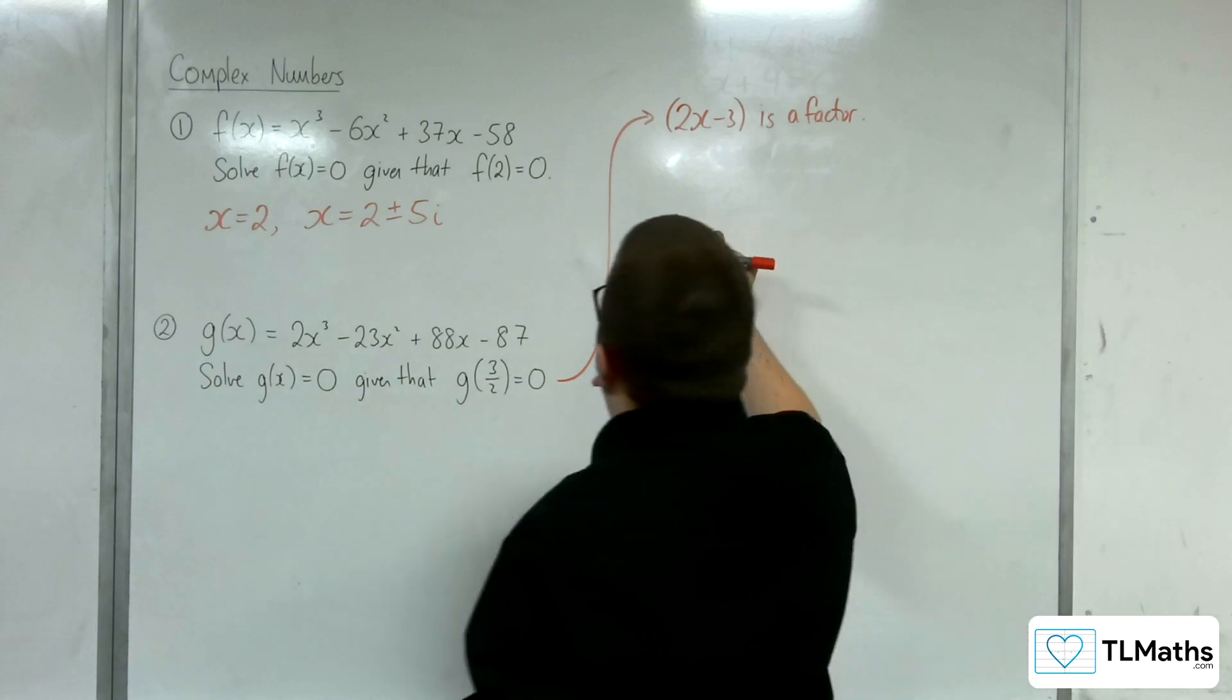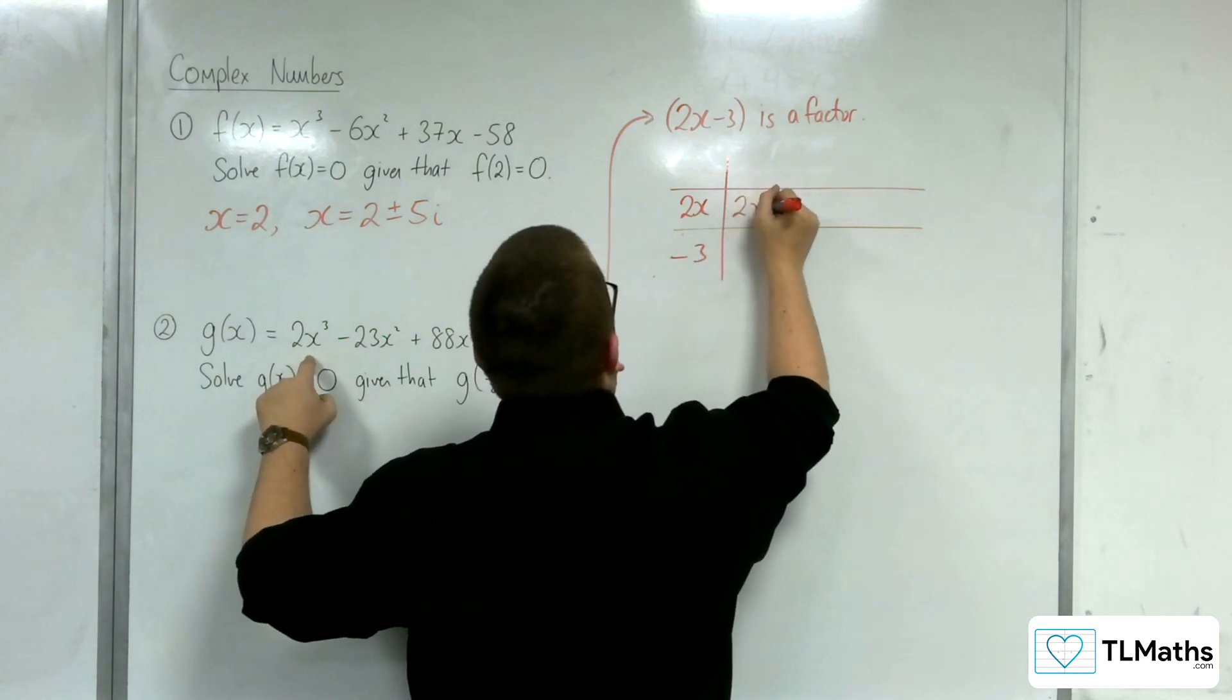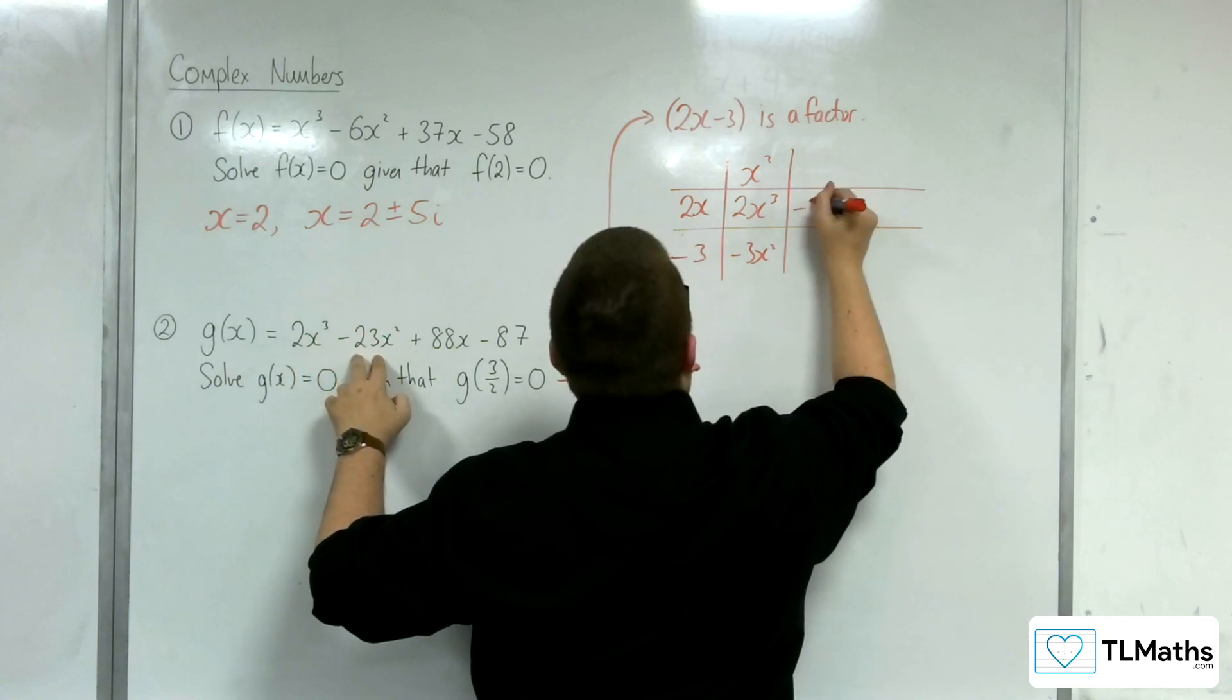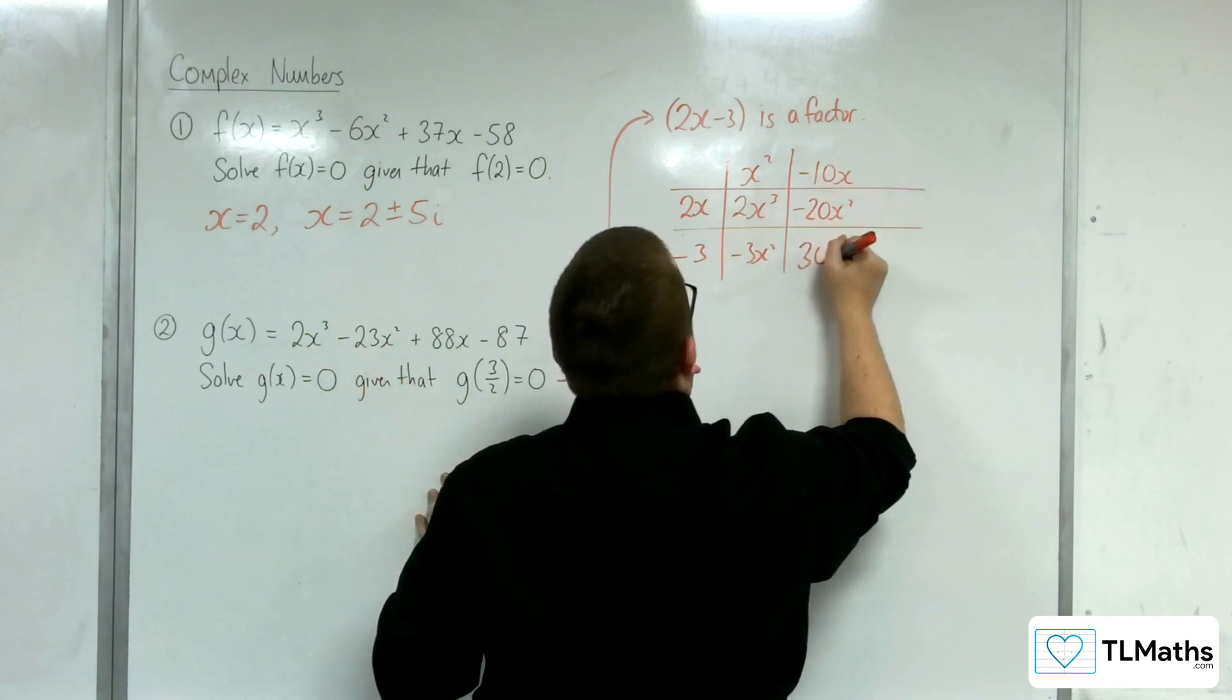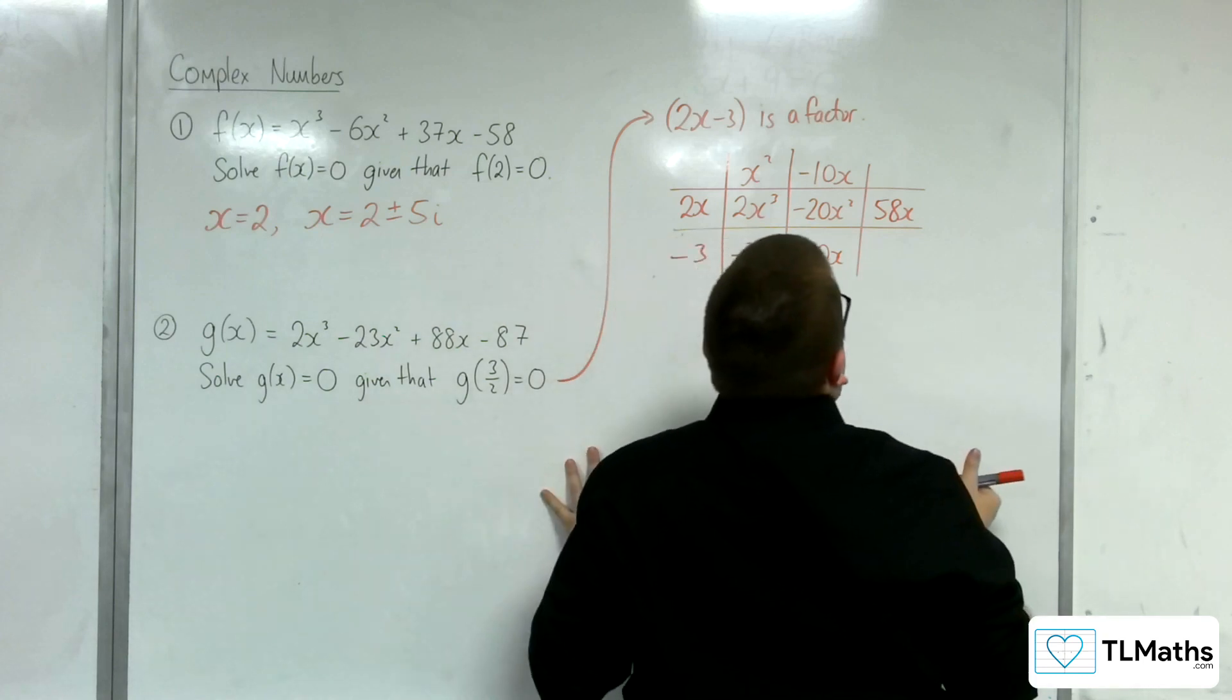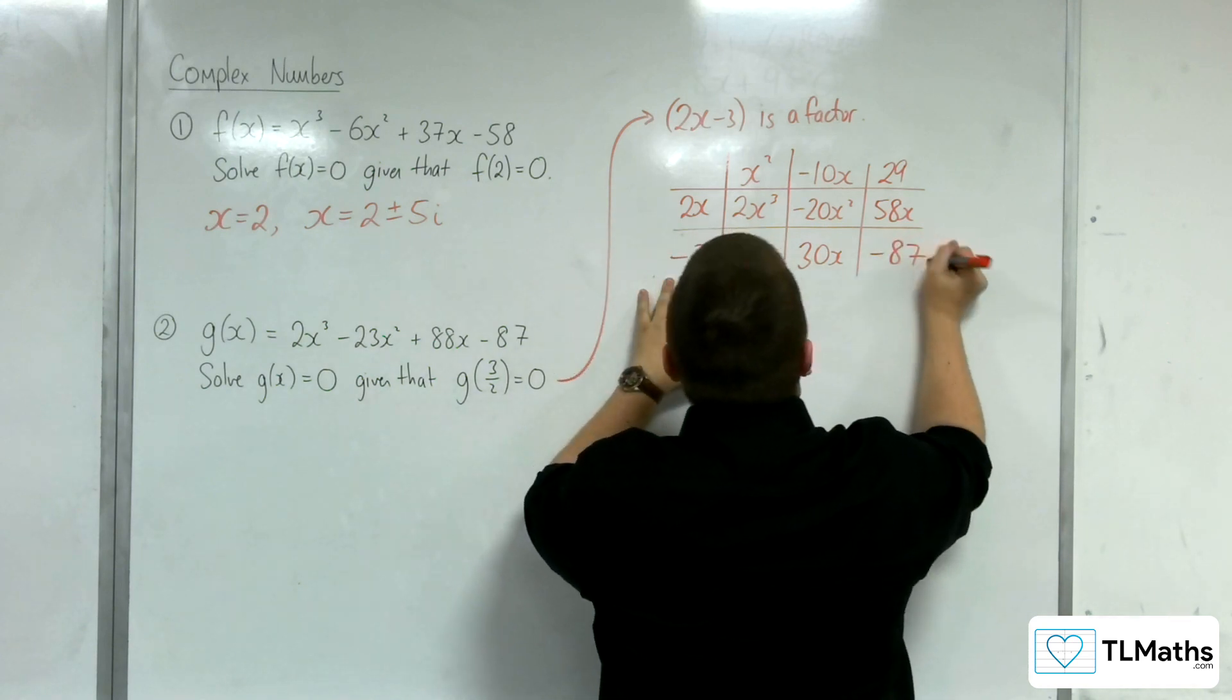So, I'm going to use polynomial division, (2x - 3). I need 2x³. So, 2x into 2x³ goes x². So, -3x². We need -23x², so take away 20x². So, we'll have -10x. So, we'd have 30x there. 88x, so that'd be 58x. And 2x into 58x goes 29. 29 times -3 makes the -87.